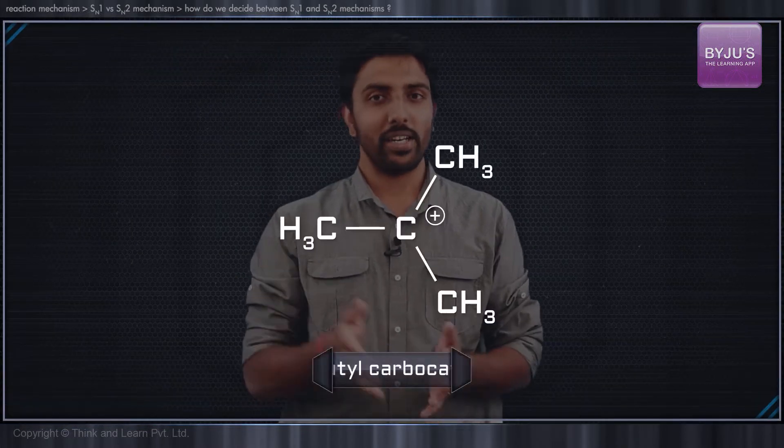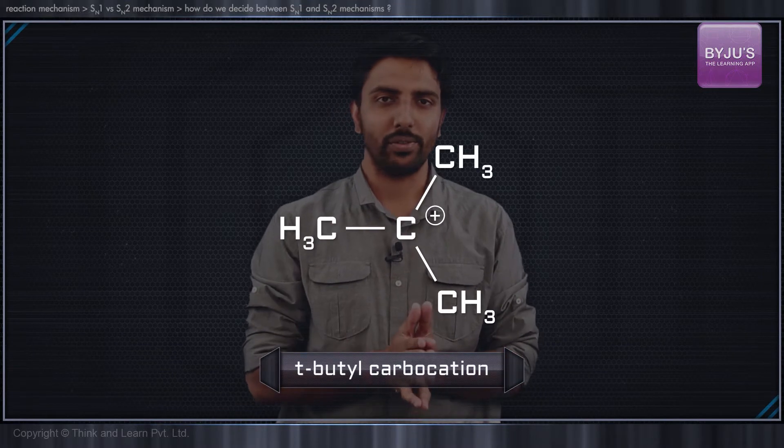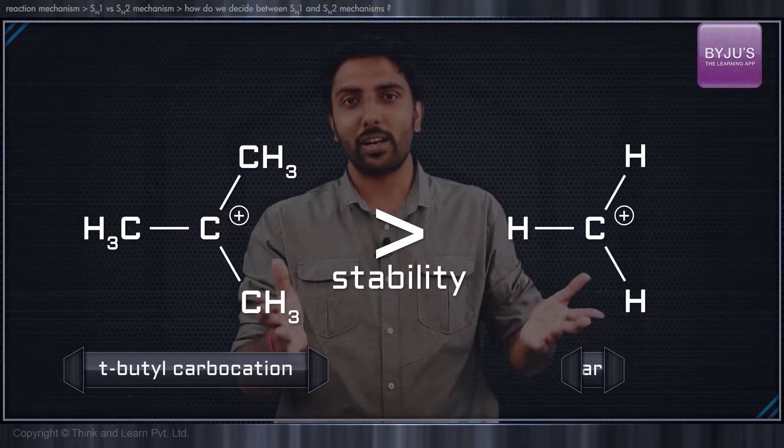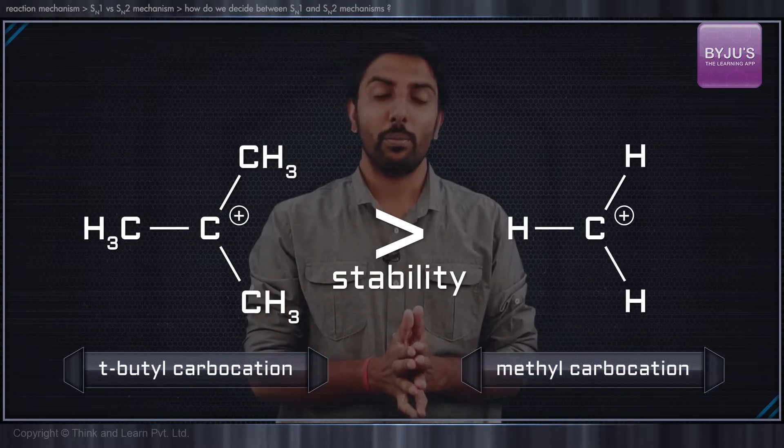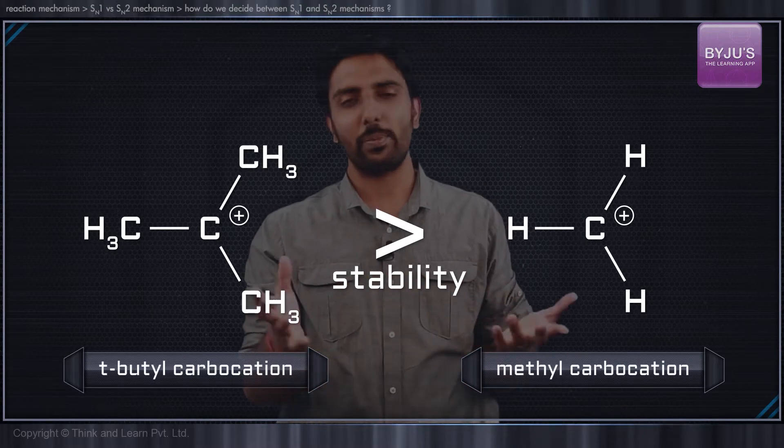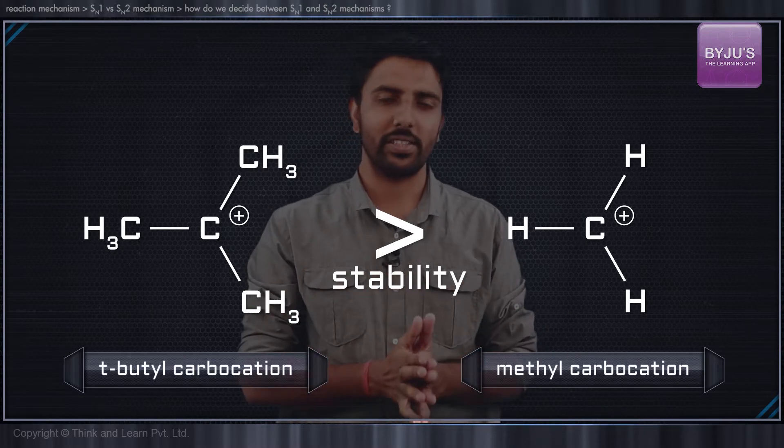Interestingly, the structural factors which make carbocations unstable are also the factors which lead to faster SN2 reactions. For example, the tertiary butyl carbocation is definitely much more stable than the methyl carbocation because of the inductive as well as the hyperconjugation effects.